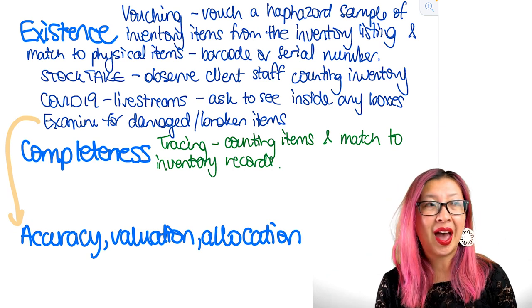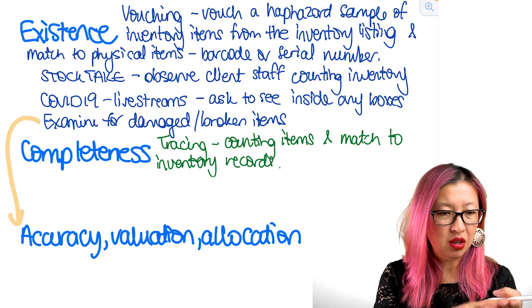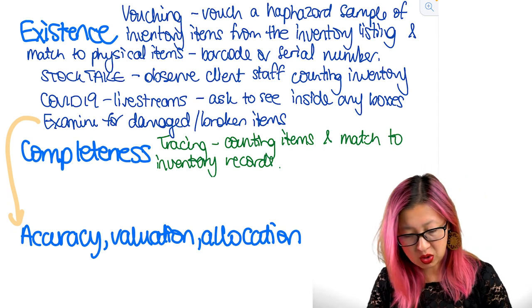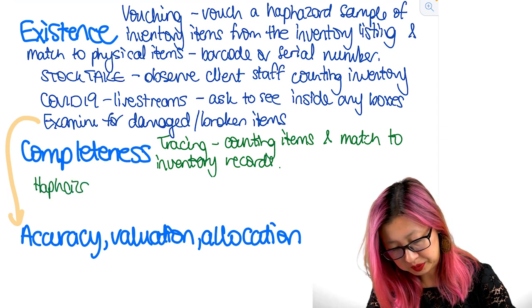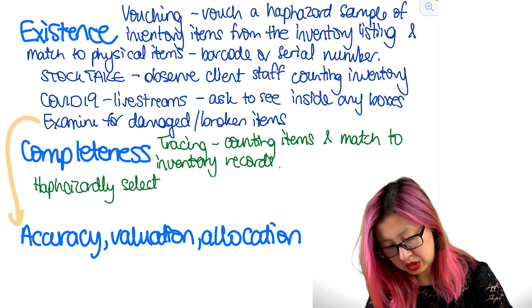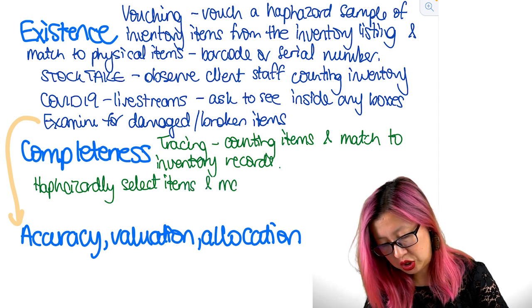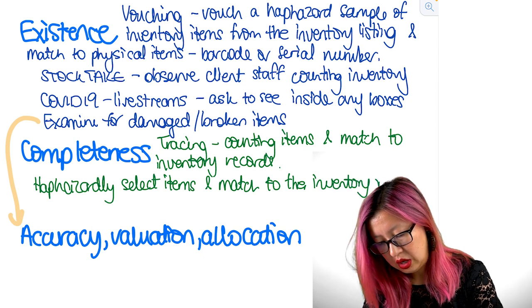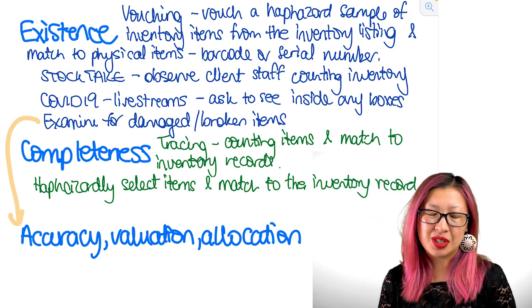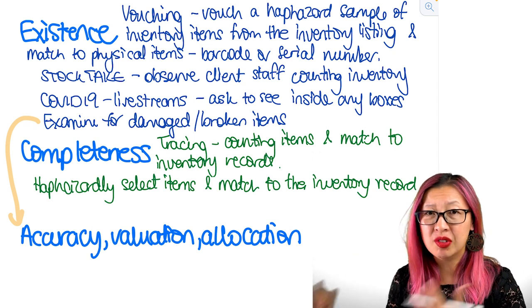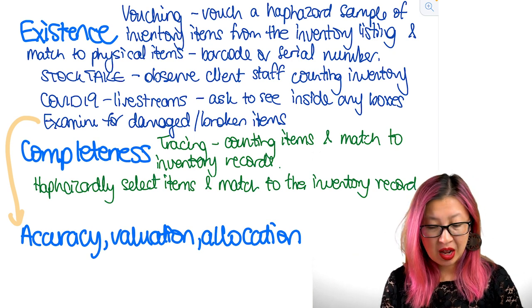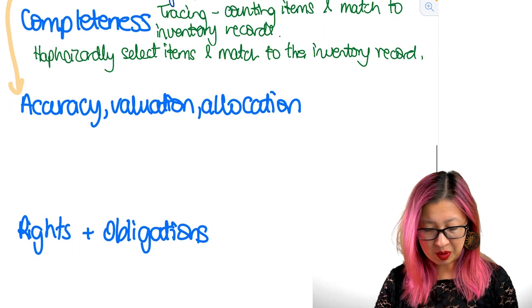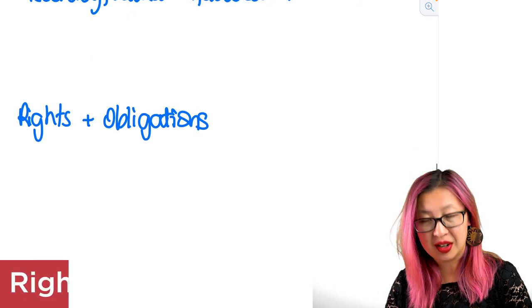Now when it comes to supermarkets it's more likely to be the existence issue than the completeness issue but we want to do both. So a stock take involves both. Start from the list, work back to the item and pick a random item in the factory and say oh do I find this on an inventory listing somewhere. So you could count an item and match to an inventory record or you could haphazardly select items and match to the inventory record. And that will help you make sure that if there is something that they made that maybe didn't get recorded in the inventory that somehow you've picked that up.